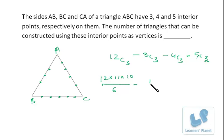3C3 is 1, 4C3 is 4, and 5C3 is 5C2, so it's 5 into 4, that's 20 by 2, which is 10. So it's 220 minus 15.